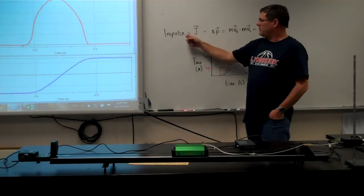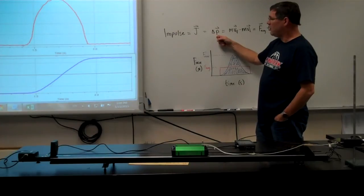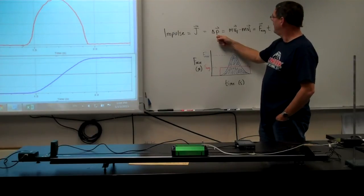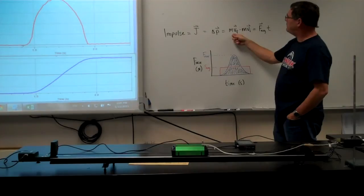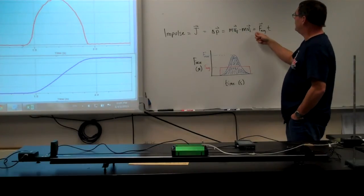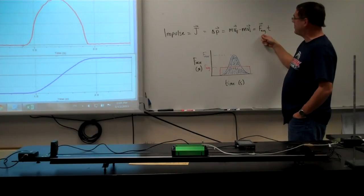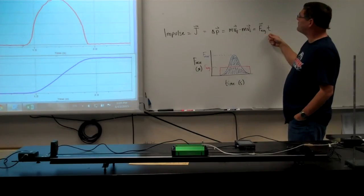Here's our equation. Impulse, represented by the letter J, is equal to a change in momentum, delta P. So that's my final velocity times mass minus my initial velocity times mass. And we know that a change in momentum is caused by some force acting for some amount of time.